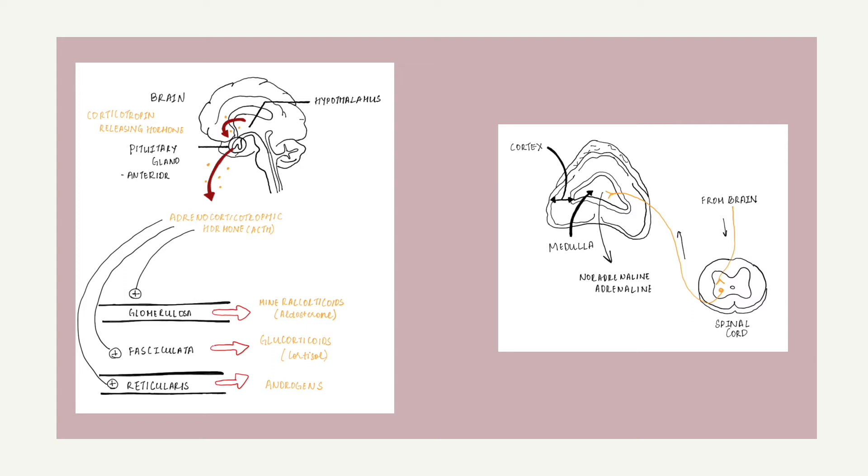As you can see in the first picture, when the hypothalamus produces corticotrophin-releasing hormone (CRH), it stimulates the pituitary gland to release adrenal corticotrophic hormone (ACTH). These hormones, in turn, alert the adrenal glands to produce corticosteroid hormones.